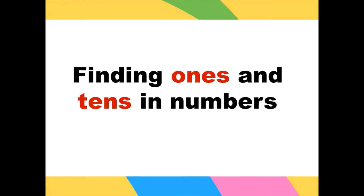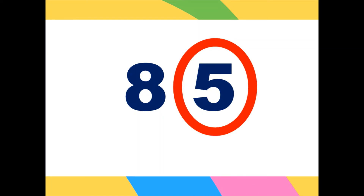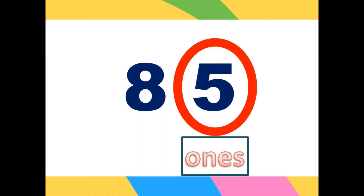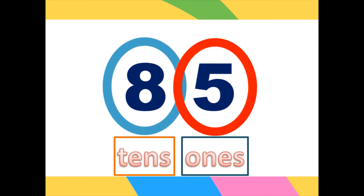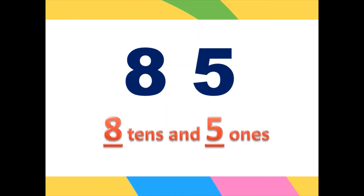Now let us find ones and tens in a set of numbers. This time we are not going to use blocks. We have the number 85. Let's find out what the digit 8 represents and what the digit 5 represents. The digit 5 represents ones and the digit 8 represents tens. So 85 means eight tens and five ones.